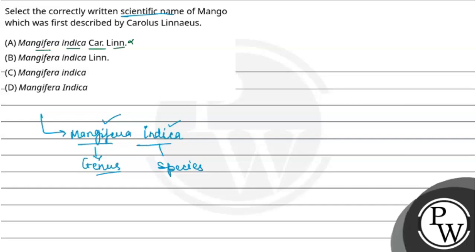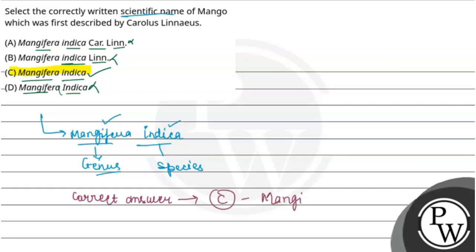Option B, Mangifera indica Linnaeus, is also incorrect. Option D is incorrect because the 'I' in indica is written as capital, but it should be small since indica is the species name. So the correct answer is option C, which is Mangifera indica — correctly written as per the standards of binomial nomenclature. I hope you understand well. Best of luck.